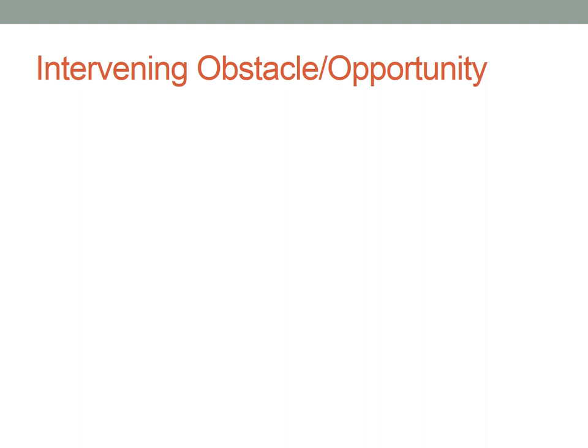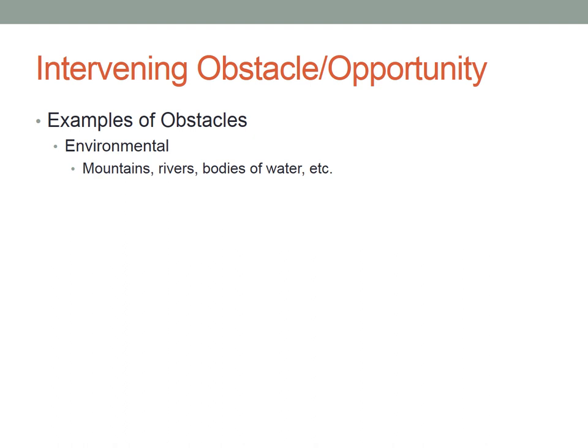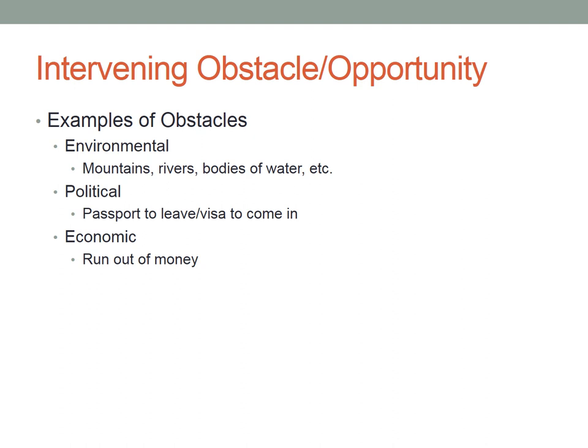Now we're getting into examples of intervening obstacles and opportunities. I want you to add examples that fit not just environmental, economic, and cultural, but also ESPN-DC. For intervening obstacles: an environmental obstacle would be mountains, rivers, or bodies of water that hinder or slow down migration. Political — which falls into cultural — would be the necessity to have a passport or visa to leave or enter a country, which would slow down migration. As far as economics, a very easy one: you run out of money — that would definitely slow down migration.